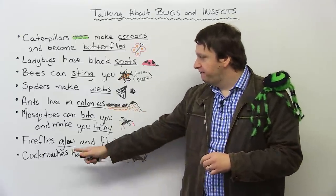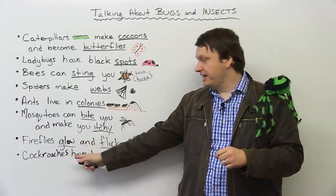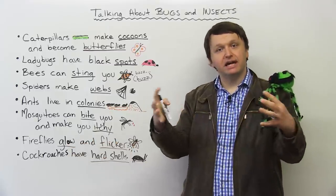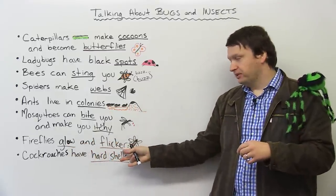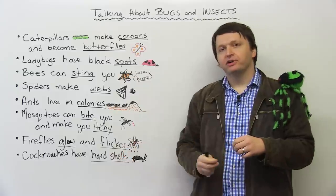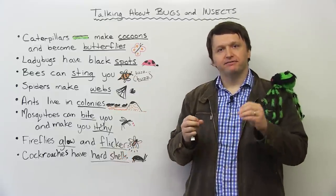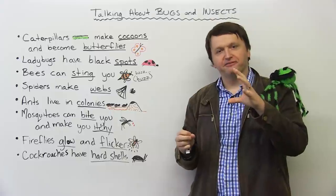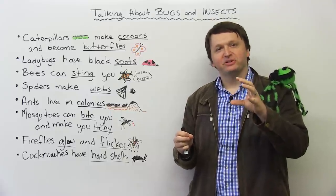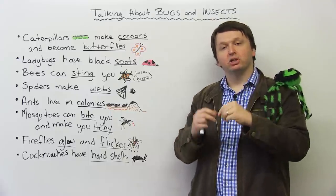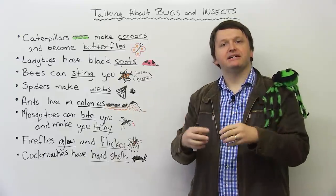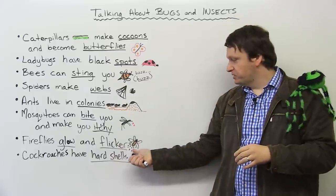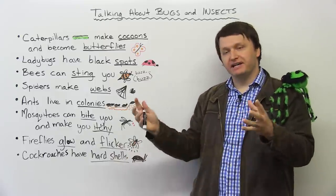Next, fireflies. Fireflies glow, which means they give light, and flicker. So when you think of flicker, think of lights that go on and off repeatedly. So they glow, they give light at night, and they flicker. Here's a picture of a firefly giving light.